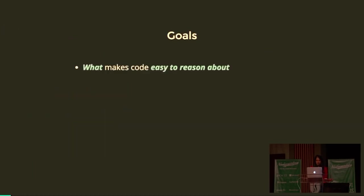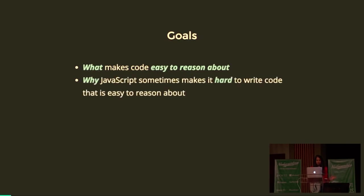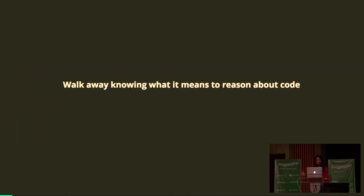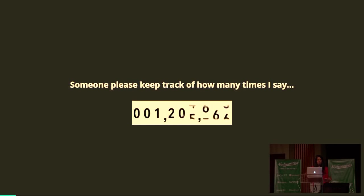I wanted to create a somewhat concrete definition for what this means and why we talk about reasoning about code. The goals of this talk are: define what makes code easy to reason about, explain why JavaScript sometimes makes it hard to write such code, and then talk about different methodologies we can use to write JavaScript code that's easy to reason about. If you walk away with anything, I want you to know what it actually means to reason about code and not hand-wave over this concept.